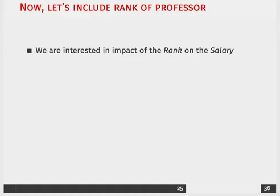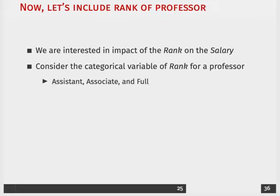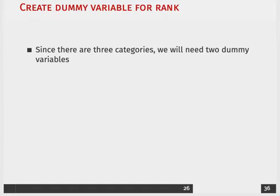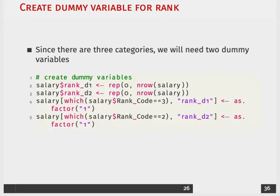Now we're going to include the second variable of interest: the rank of the professor. This is a multi-category dummy variable, so we need to think about how to dichotomize this trichotomous variable. We'll represent it with two categorical dummy variables — the first indicating assistant and the second indicating associate — so the baseline category is full professor, which will have zeros in both dummies. If the professor is an assistant, they get a one in the first dummy and zero in the second. If they're an associate, they get a zero in the first and one in the second.